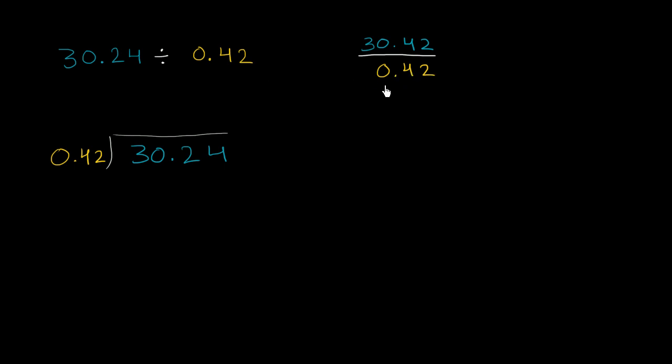And so what could we multiply this denominator by to make it a whole number? Well, we could multiply it by 10 and then another 10. So we could multiply it by 100. So let's do that. If we multiply the denominator by 100, in order to not change the value of this, we also need to multiply the numerator by 100. We're essentially multiplying by 100 over 100, which is just 1. So we're not changing the value of this fraction or of this division problem.